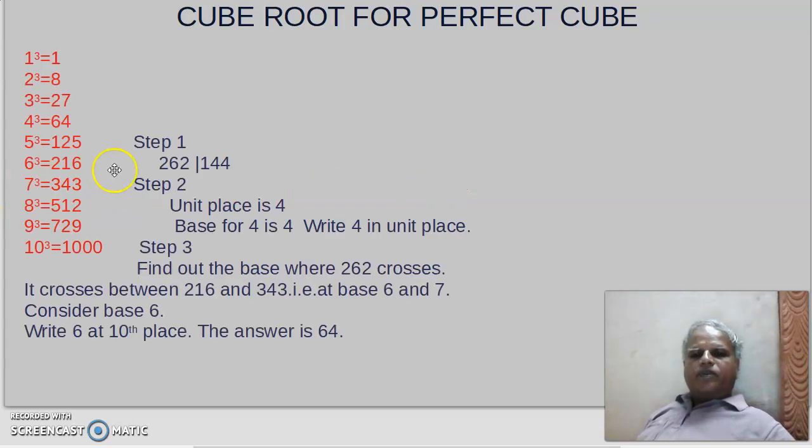First, before doing that, we have to keep in mind: 1 cube is 1, 2 cube is 8, 3 cube is 27, 4 cube is 64, 5 cube is 125, 6 cube is 216, 7 cube is 343, 8 cube is 512, 9 cube is 729, and 10 cube is 1000. We have to keep these in our mind.